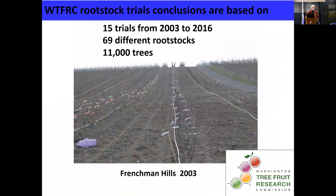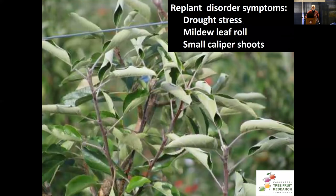When I was working with the Tree Fruit Research Commission, we started in 2003 looking at rootstocks. We did 15 trials looking at 69 different rootstock genotypes and over 11,000 trees, with a focus on the replant problem. We have these very typical traits of cupped leaves, very small caliper shoots, and very poor growth — all very typical for our replant problem.